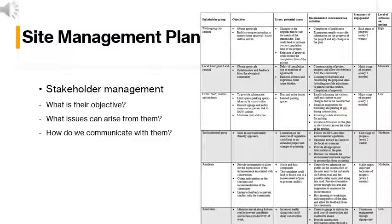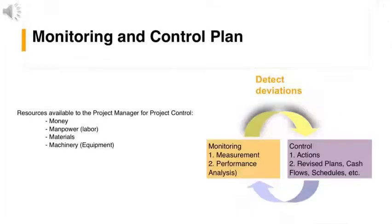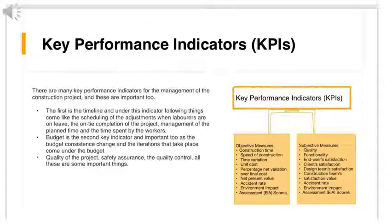Ruchi will now talk you through the Monitoring and Control Plan. Management of construction and control process includes the examination and assessment of estimated and measured outcomes. The monitoring process involves steps to accumulate, measure and compare, assess and replan, accept the situation, plan, document and take corrective action. For the success of the project, improved communication is important. There must be communication between stakeholders; when this is not the case, the project can fail.